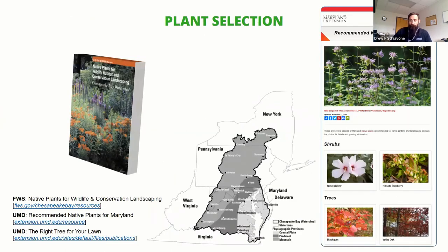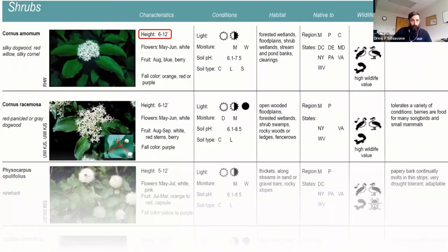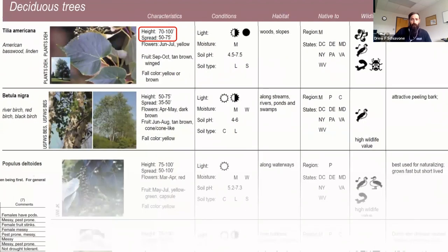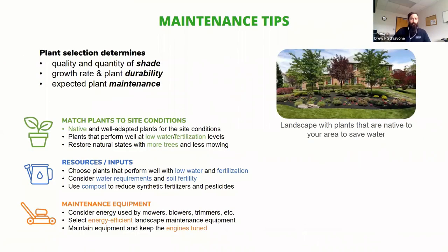In terms of plant selection, there are a number of resources. The Fish and Wildlife Service has a great handbook on conservation landscaping, and the University of Maryland Extension has some great resources on their website. You can also connect with a county agent. When selecting plants, you're looking at shape, height, and how well it will block, in addition to soil type and other factors. These resources will be shared in the recording and when the presentation is online.